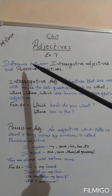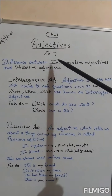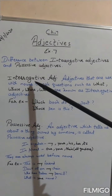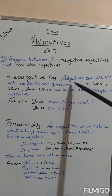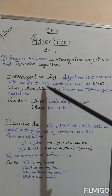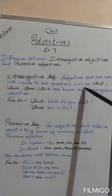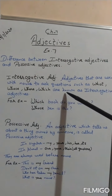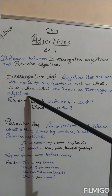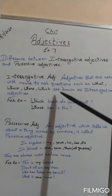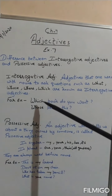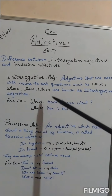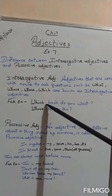Now see what is the difference between interrogative adjectives and possessive adjectives. Interrogative adjectives are adjectives that are used with nouns to ask questions, such as what, whose, which. These are known as interrogative adjectives. Interrogative adjectives क्या होते हैं? वो adjectives जो noun के साथ में यूज किए जाते हैं, उनको हम interrogative adjectives कहते हैं.